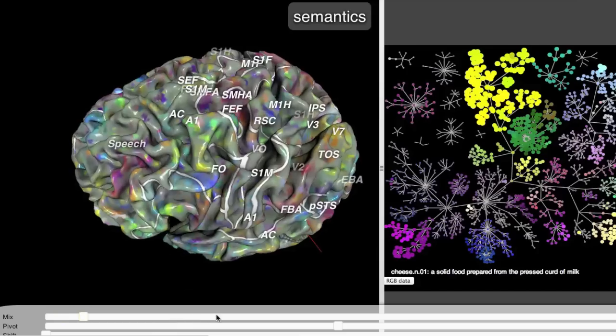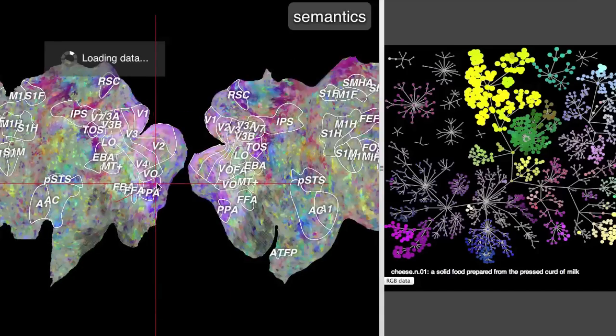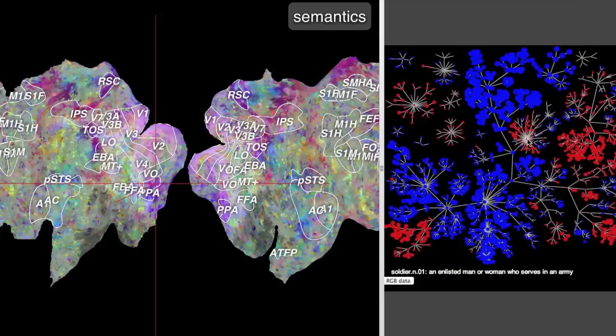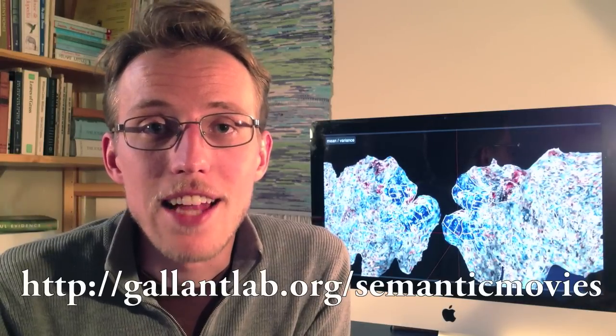Now if you find this as exciting as I do, you'll be itching to play with this data yourself. Well, you're in luck. We've made an online viewer where you can see the flattened and 3D brain maps. You can click on each voxel to see exactly which categories it represents, or you can click on each category to see exactly how it's represented across the cortex. This viewer is available now at gallantlab.org/semanticmovies.